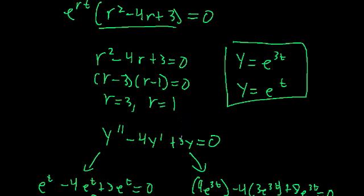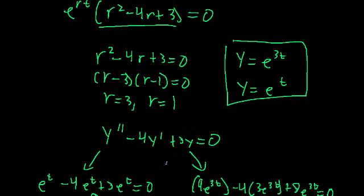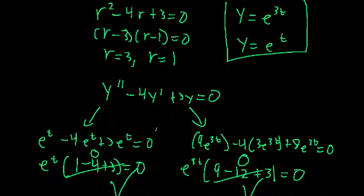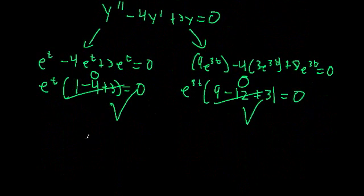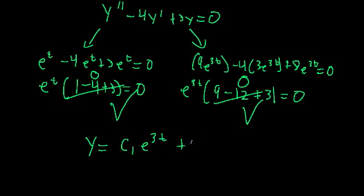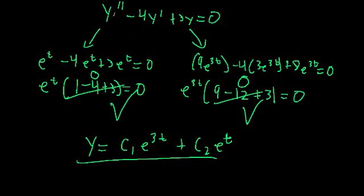In order to describe every possible solution to this differential equation, we need to find the general solution. We'll see in the next video that the general solution is a linear combination of our linearly independent solutions. So the general solution is c1 times e to the 3t plus c2 times e to the t, and we'll see why this is the case in the next video.